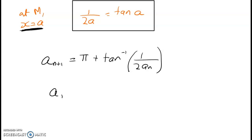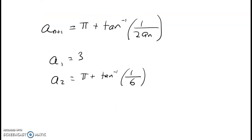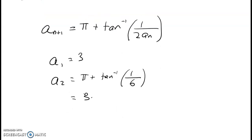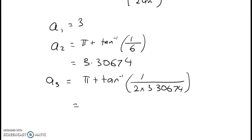So a2, a1 is 3. So my second value is going to be pi plus tan inverse of 1 over 6. And I got that to be 3.30674. So now a3 will equal pi plus tan inverse of 1 over 2 times that number. And that gets me 3.291662.